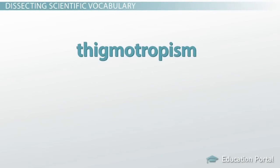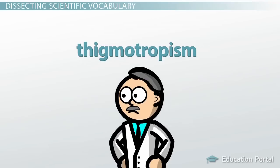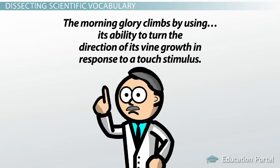You might think it's strange that a long, weird word like thigmotropism was ever invented. But imagine if you were a plant biologist trying to describe a morning glory. How would you talk about its coiling growth pattern? The morning glory climbs by using its ability to turn the direction of its vine growth in response to a touch stimulus.